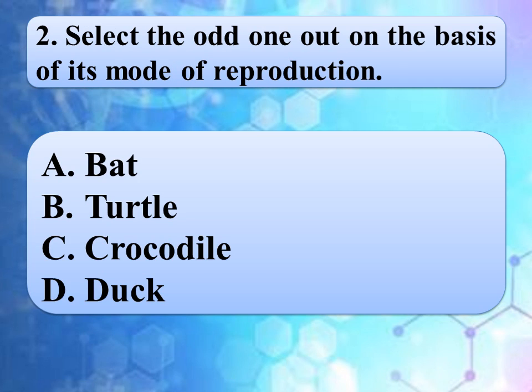Our next question is: select the odd one out on the basis of its mode of reproduction. Option A: bat. Option B: turtle. Option C: crocodile. Option D: duck. The correct answer is option A, bat. Turtle, crocodile and duck are egg-laying animals, while bat is a mammal that gives birth to young ones.